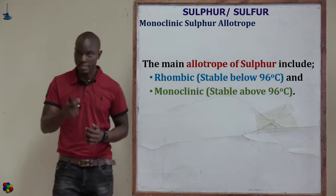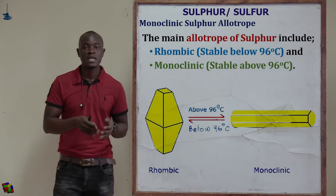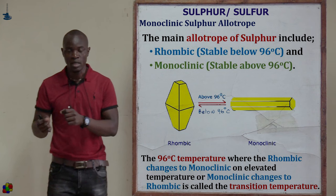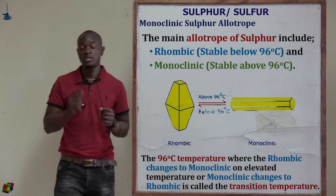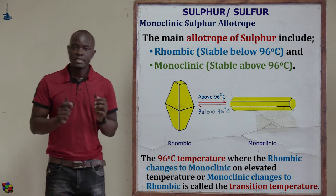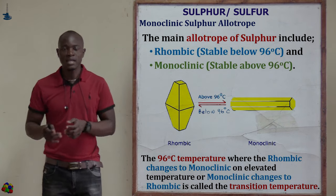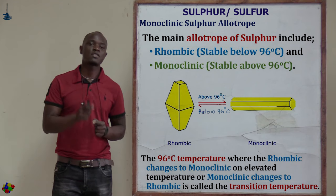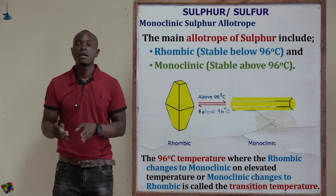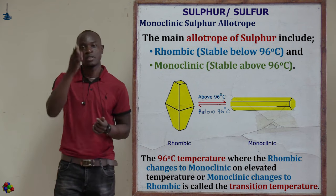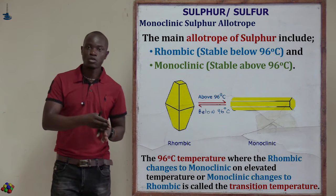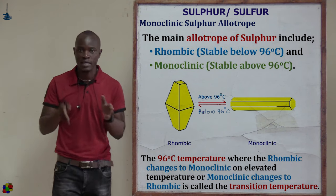Monoclinic sulfur is stable above 96 degrees Celsius and unstable below it, since it converts to rhombic sulfur below that temperature. The temperature at which monoclinic sulfur changes to rhombic sulfur, or rhombic changes back to monoclinic, is called the transition temperature — the intermediate temperature at which one allotrope of sulfur changes to another by varying temperature.